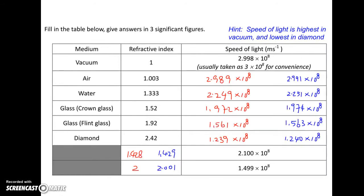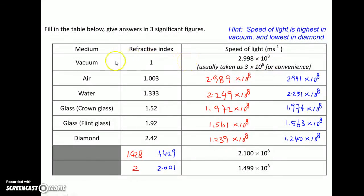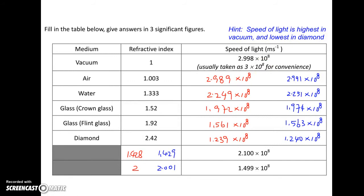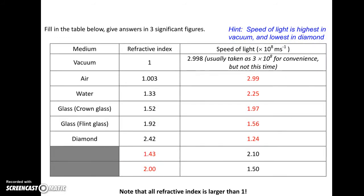For this question, you may use 2.998 x 10 to the power 8 meters per second to be the speed of light in vacuum, or you may use 3 x 10 to the power 8 to be the speed of light. And in these cases, if you write your answer in three decimal places, they will be the same, like this.